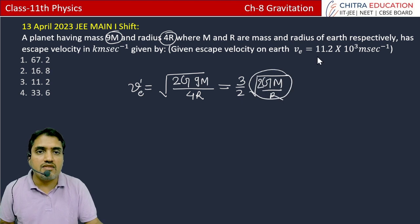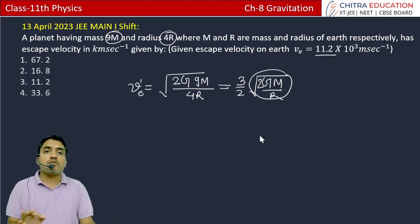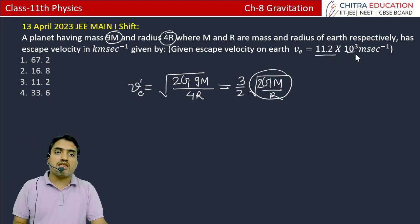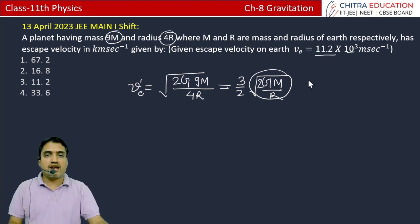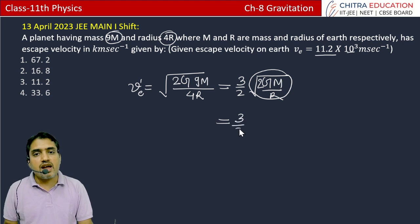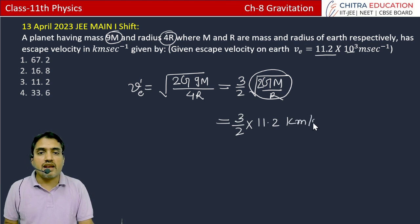And if we look at this value, then its value given is 11.2 × 10³. After converting to km, we will get 11.2 km. This means its value we can write as 3 by 2 times 11.2 km per second.